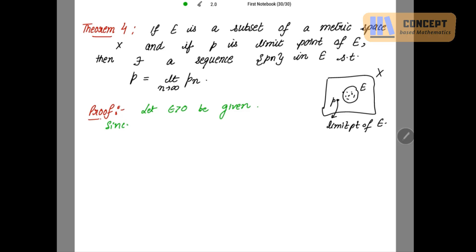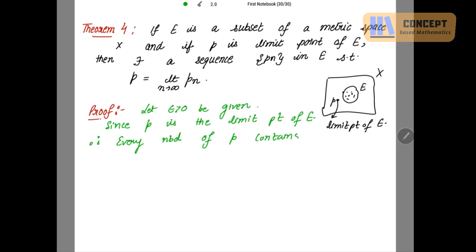Now since P is the limit point of E, by the definition of a limit point, every neighborhood of P contains infinitely many points of E. So since P is a limit point of E, we can say that every neighborhood of P — NBD denotes neighborhood — every neighborhood of P contains infinitely many points of E.